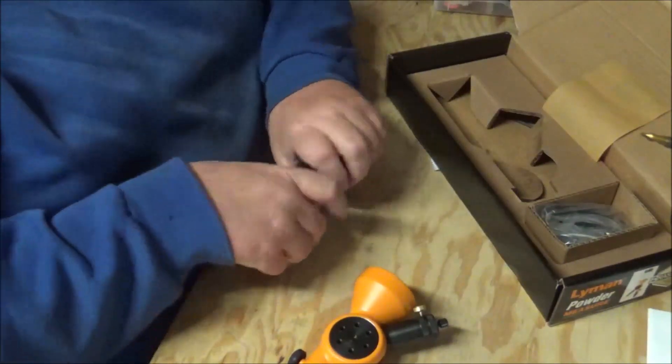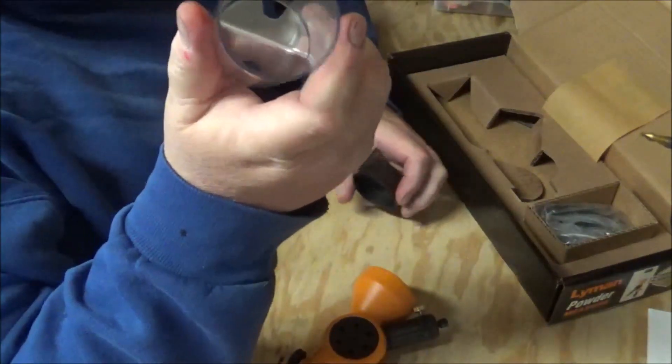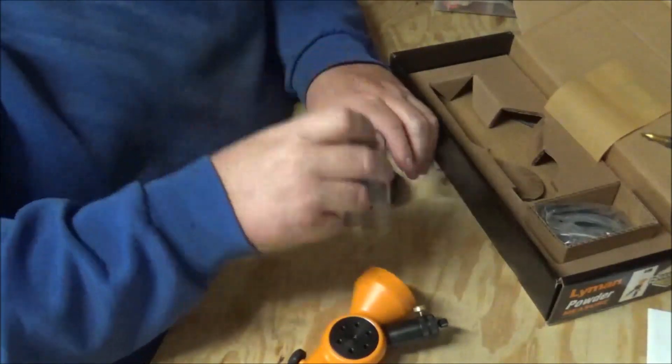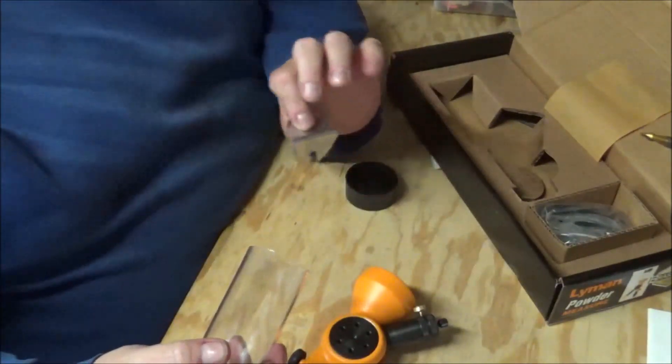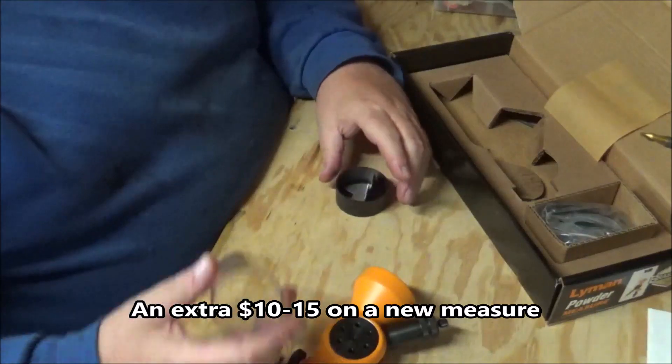And I know that baffle comes out of there. This one comes with that baffle as well. Most of the other measures that I was looking at didn't come with the baffle. You had to buy it separately. The RCBS